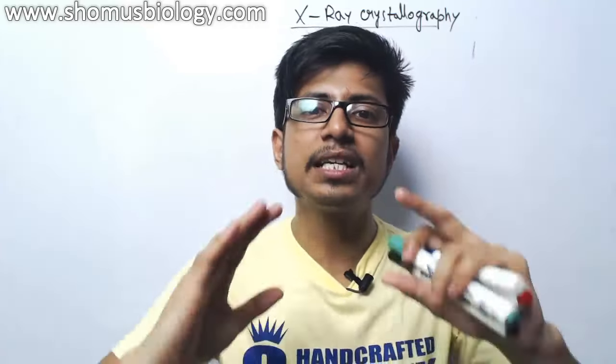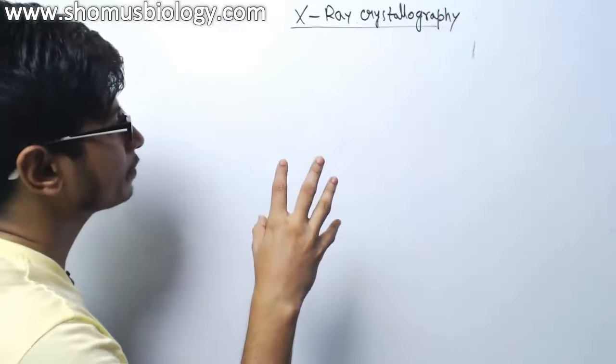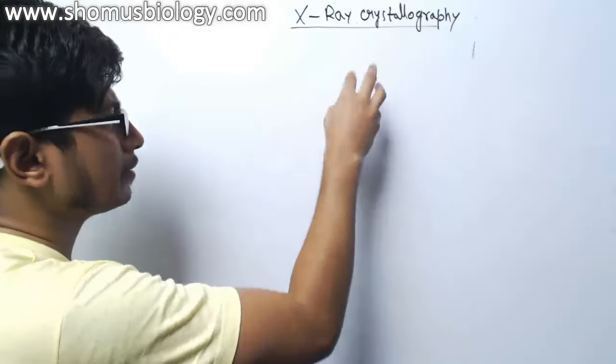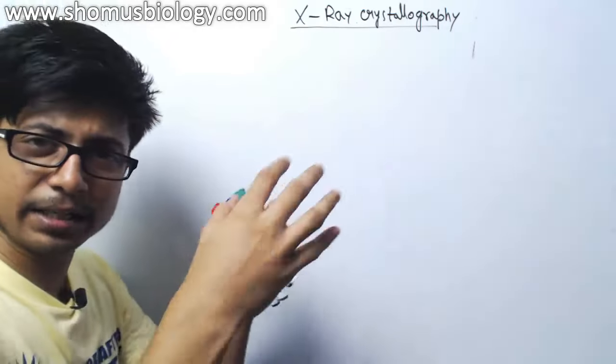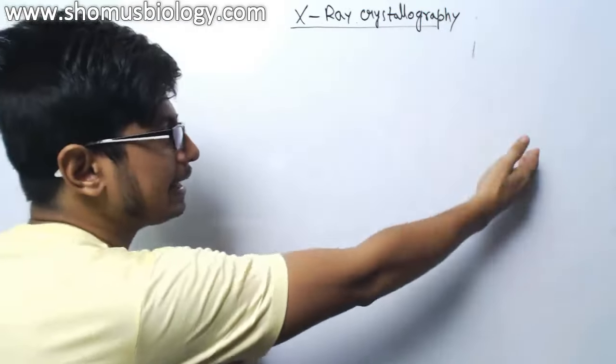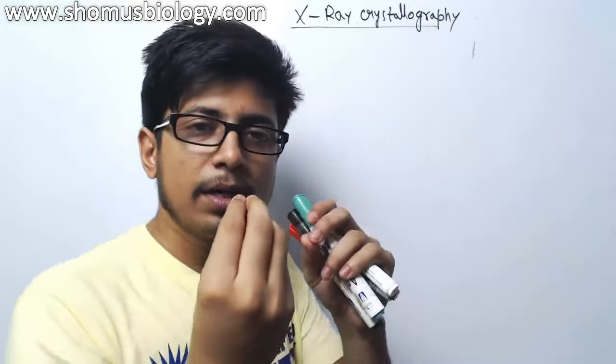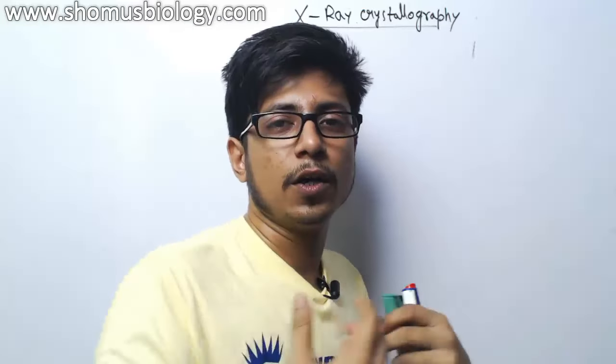The only and easy way to get the structure is to make the whole molecule freeze and fixed at a point, which we can achieve by forming a crystal of that molecule. Once we make the crystal, we can be sure that the molecule is fixed, permanent, and stagnant. So once that molecule is stagnant, it has different types of atoms linked together in different regions, and that will be fixed from the beginning to the end of the experiment, making it easy to identify the target molecule's structure.